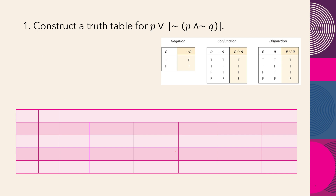The compound statement is: p disjunction of the negation of p conjunction the negation of q. First, we identify the two simple statements: p and q. Since there are two statements, there are 2-to-the-2 equals four rows: true, true, false, false for p; and true, false, true, false for q.